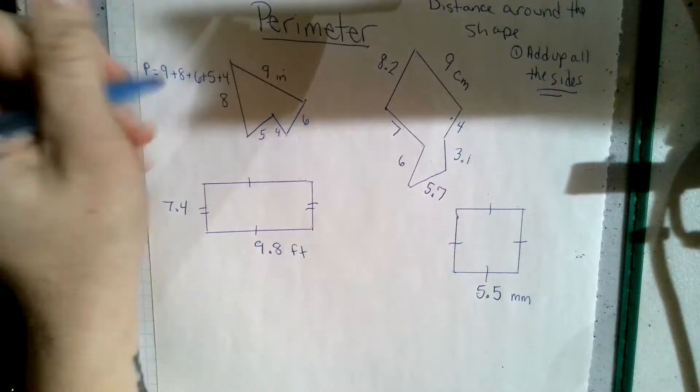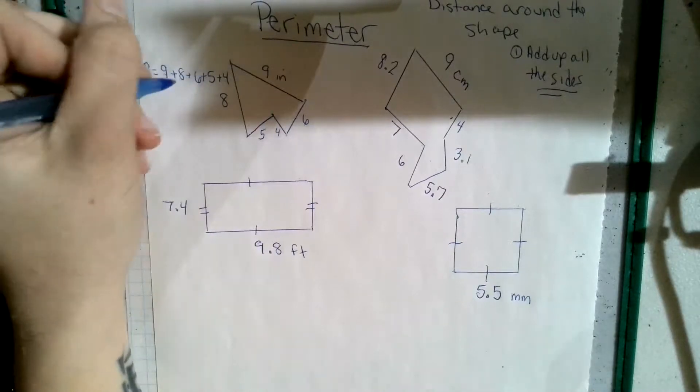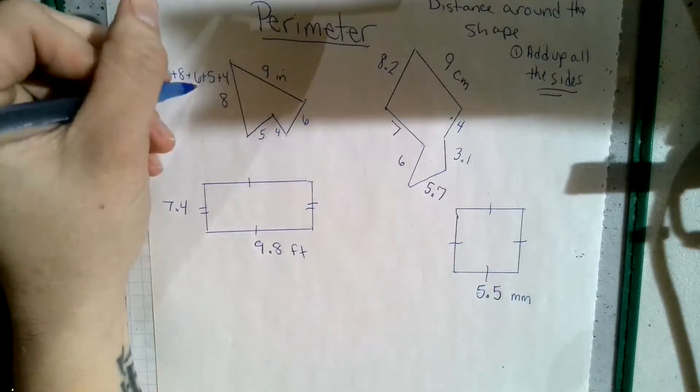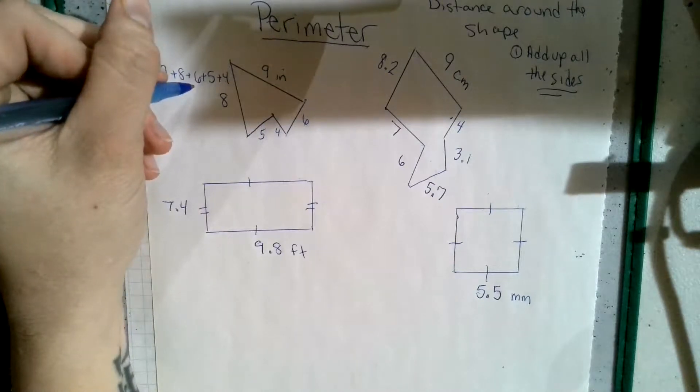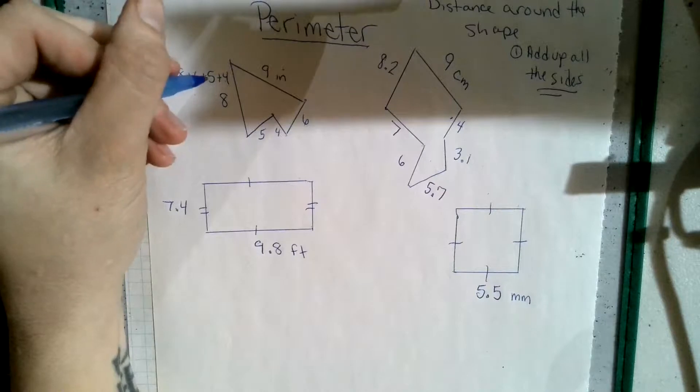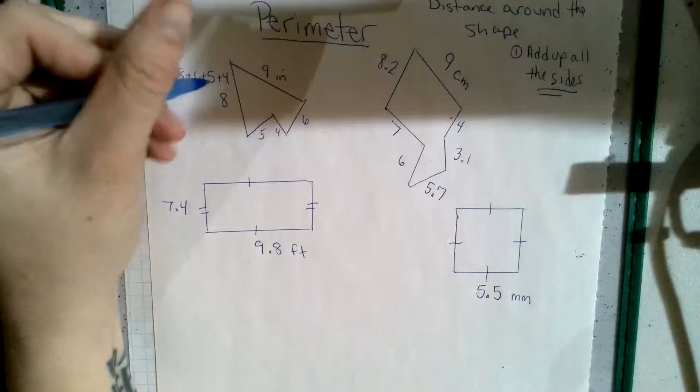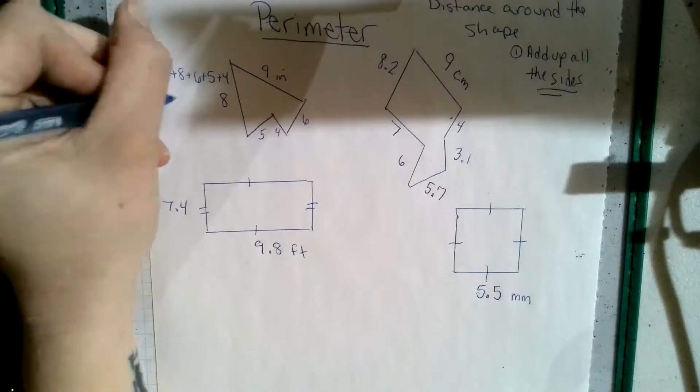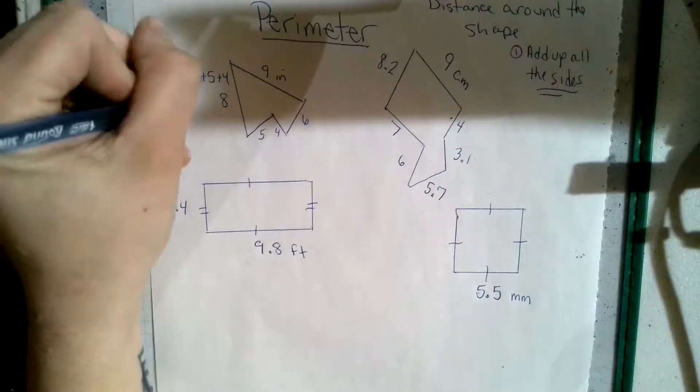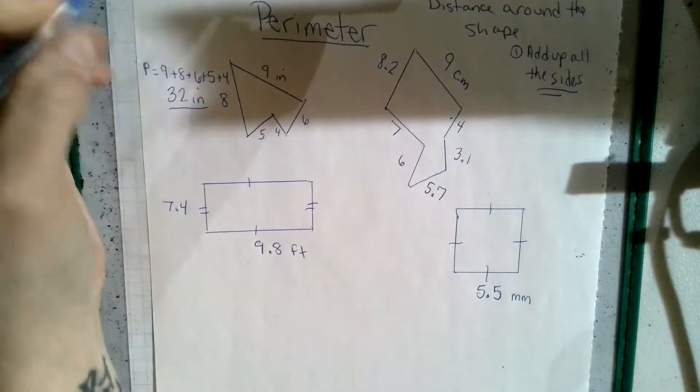So 1, 2, 3, 4, 5. So then we just add it up. 9 and 8 is 17 plus 6. So 17, 18, 19, 20, 21, 22, 23. 23 and 5, so 24, 25, 26, 27, 28. And 4 more. 29, 30, 31, 32. So 32 inches is our total here.